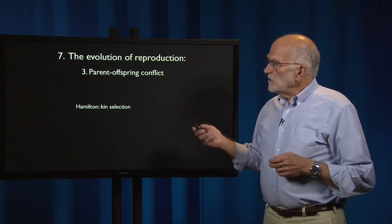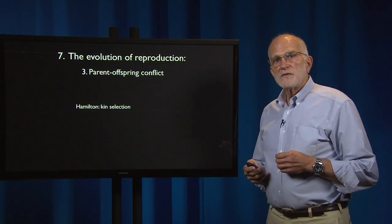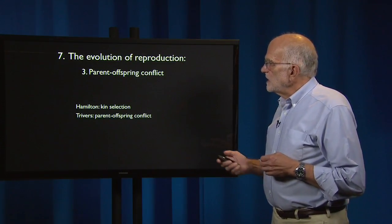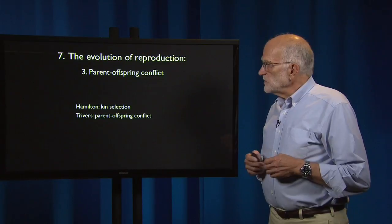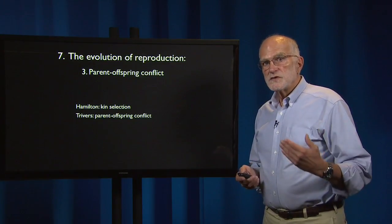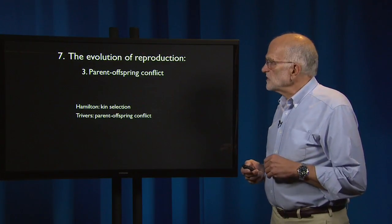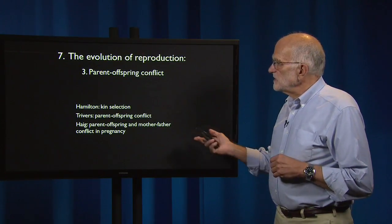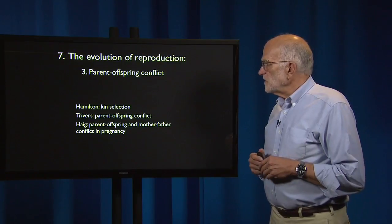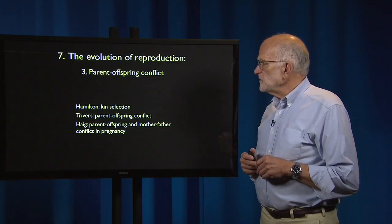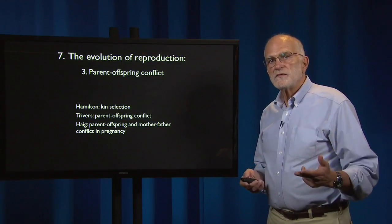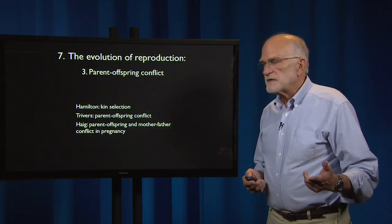We owe that to Bill Hamilton, who came up with the idea of kin selection, to Bob Trivers, who saw that that had implications for parent-offspring conflict, and to David Haig, who saw that parent-offspring and mother-father conflict both will have influence on the course of pregnancy.